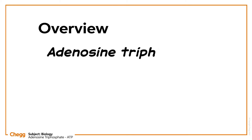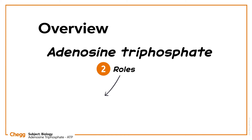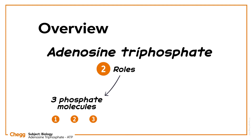We are going to discuss the basics of ATP, that is, adenosine triphosphate, and its significance. We will also discuss the role of its three phosphate molecules in making it the energy currency of the cell, and the significance of magnesium ion in balancing the structure during its catalytic activity.